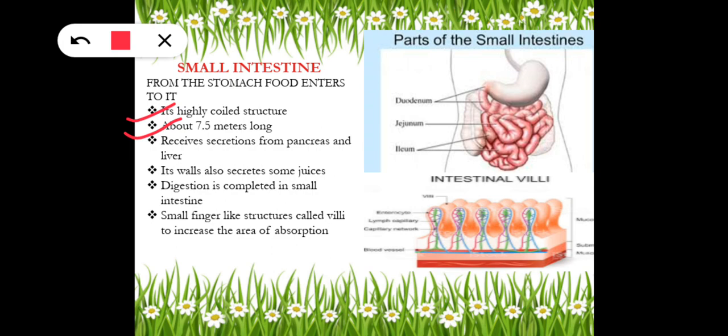The small intestine receives secretions from the pancreas and liver. Its walls also secrete juices. We have studied that carbohydrates are first digested in the mouth and protein in the stomach. Fat is digested in the small intestine. Finally, digestion is completed in the small intestine.